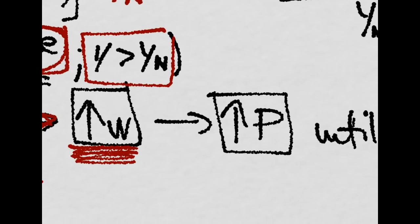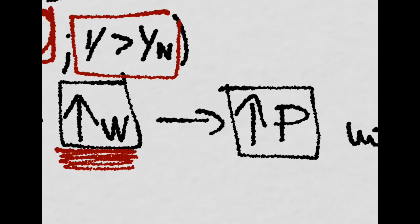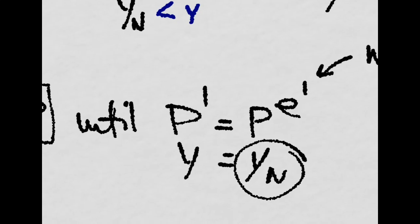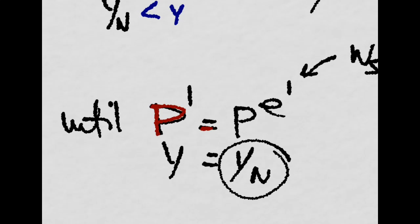And if wages increase, then costs increase, and prices will increase until the point where the new price level is equal to the expected price level, and output is equal to the natural rate of output again.